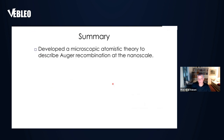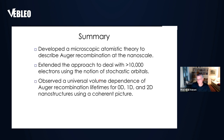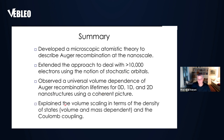To summarize: we've developed a microscopic atomistic theory to describe Auger recombination at the nanoscale. We extended the approach to deal with over 10,000 electrons using the notion of stochastic orbitals. We observed the universal volume scaling for Auger recombination lifetimes, whether the system is confined to zero-dimension, one-dimension, or two-dimension nanostructures, using a coherent scattering mechanism characterized by lowest-order many-body perturbation theory. This led to the explanation of the volume scaling in terms of the density of states and the Coulomb coupling and how they scale with system size.